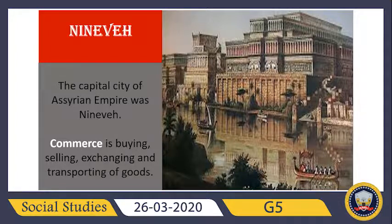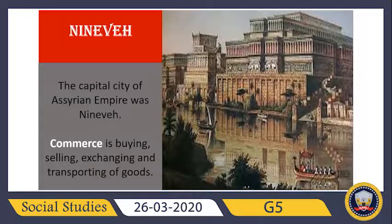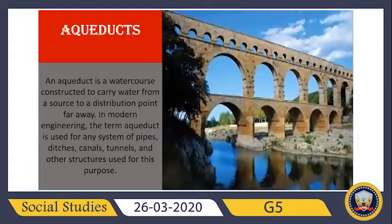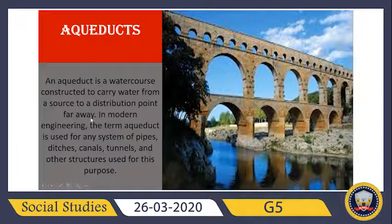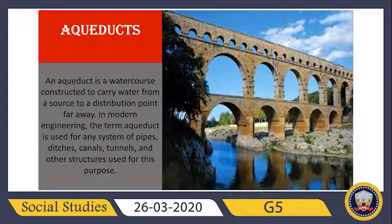Even the streets were designed to include a drainage system, so they were very developed even in those times. There is also something very special about this civilization: aqueducts. Here you can see aqueducts and the definition of what they are. The Assyrian cities had aqueducts, which were stone channels or pipes that carried water from distant places.